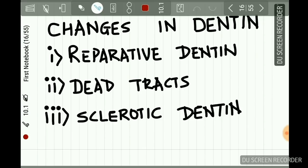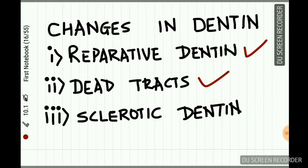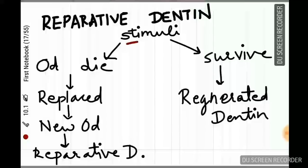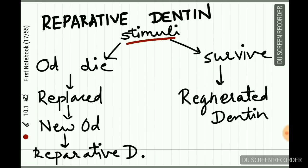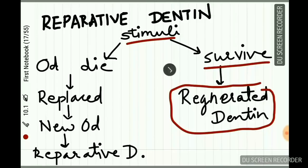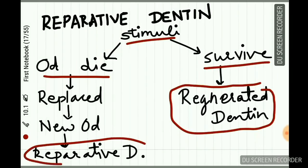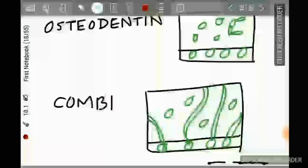These changes occur in the form of reparative dentine, dead tracts, or sclerotic dentine. Regarding reparative dentine: when an external stimulus acts on the tooth, the odontoblasts are injured. If the odontoblasts survive the injury, they deposit regenerated dentine. If the odontoblasts die, they are replaced by new odontoblasts.